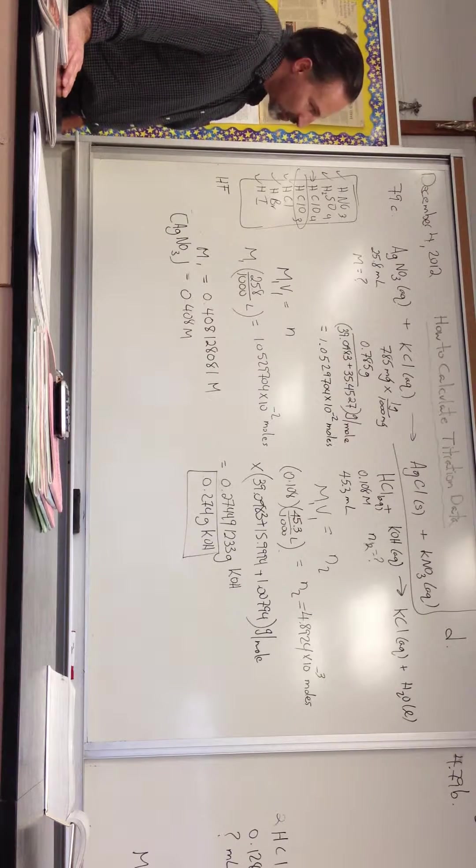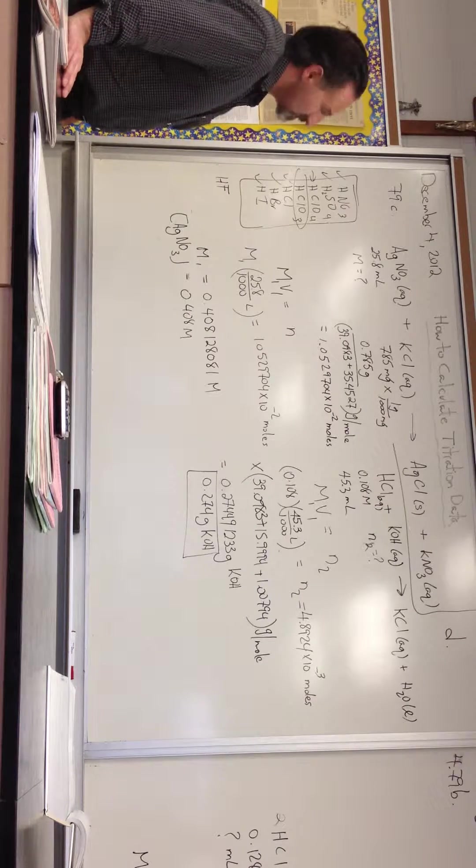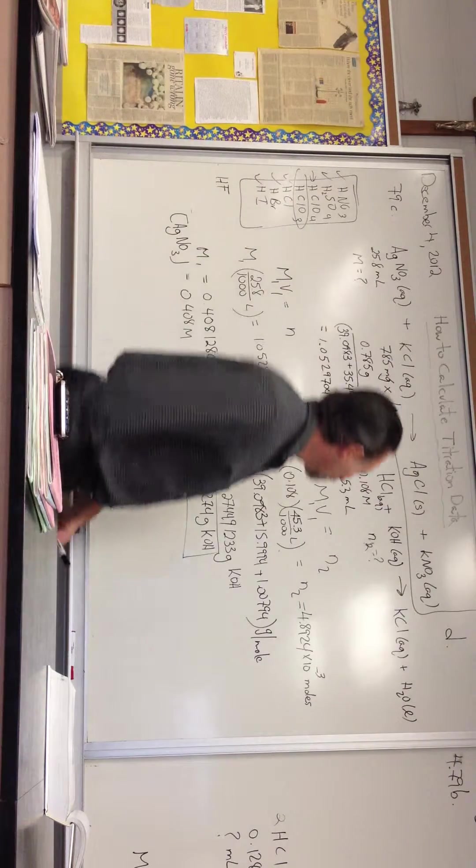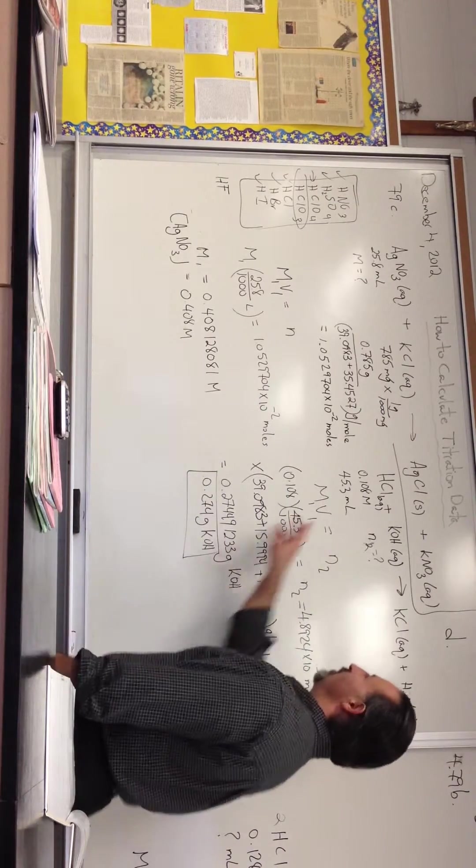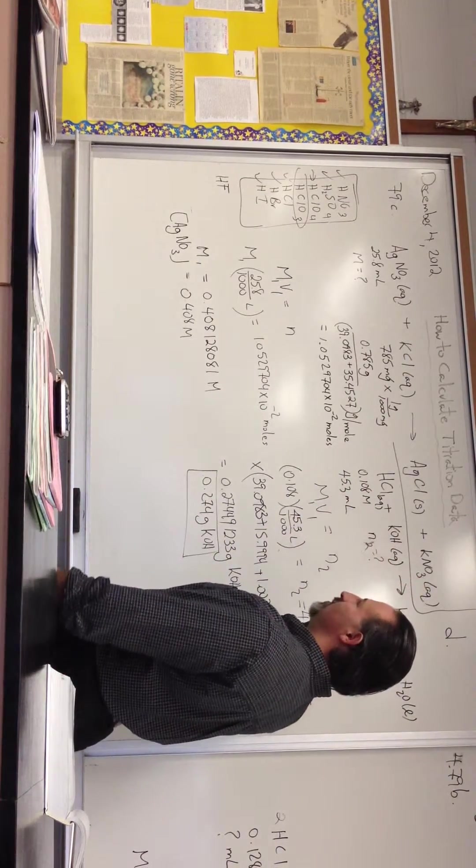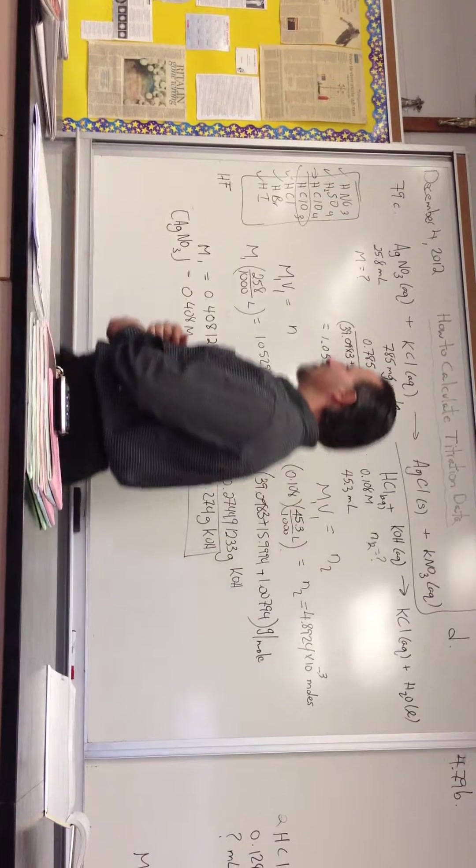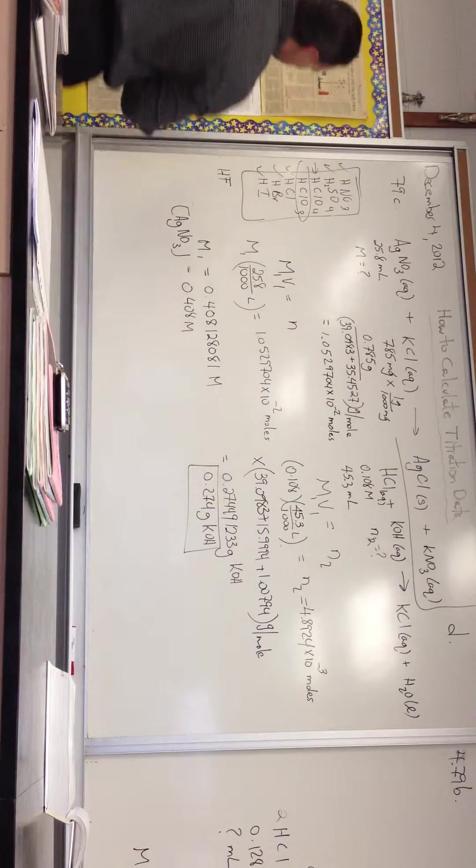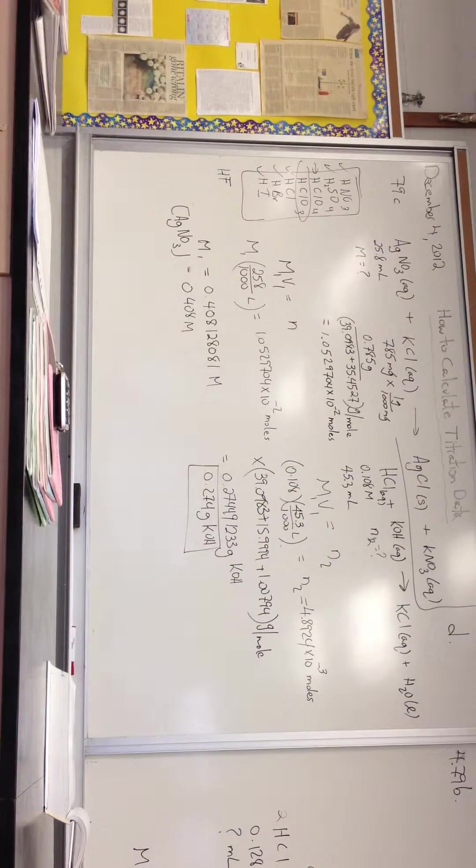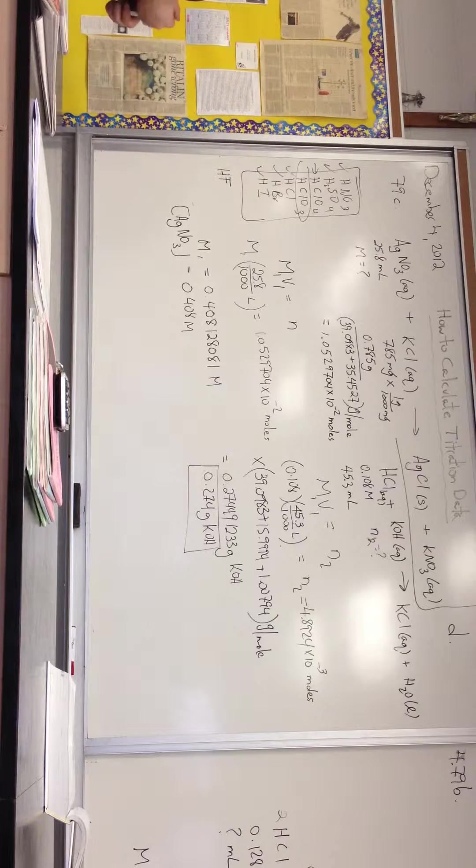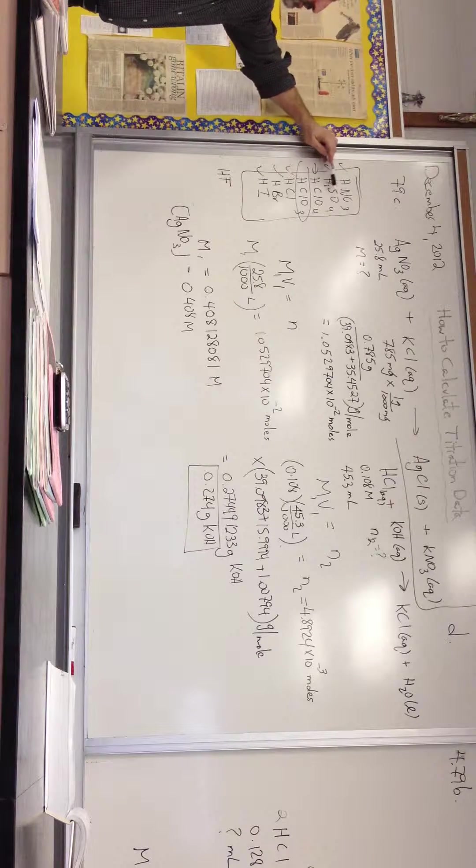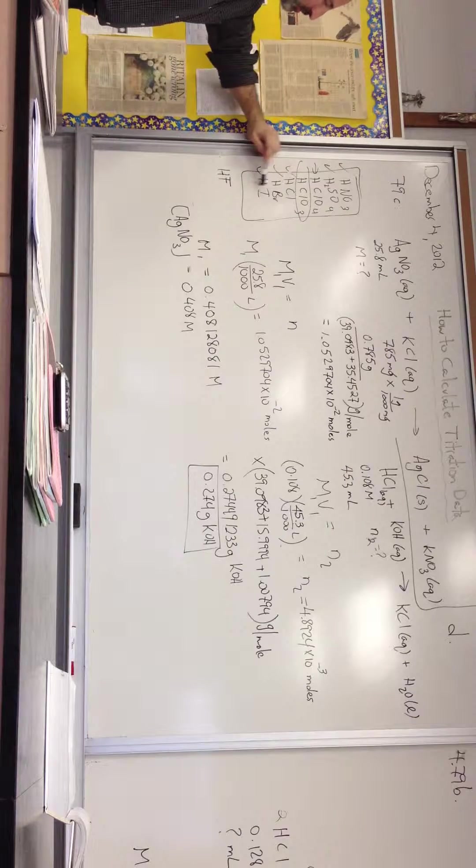The third question, D in number 79, we're titrating a strong acid with a strong base. Before I continue, I just want to recap what the seven strong acids are. There are only seven strong acids in the universe, and the mnemonic for memorizing them is no, so, clock, clock, will breathe.